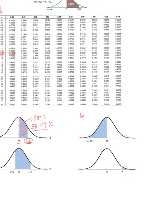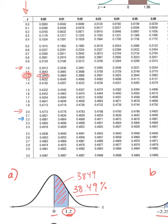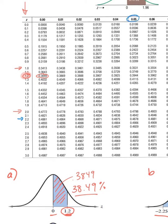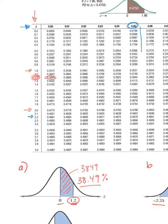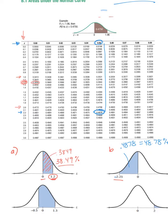Part B asks for the area between 0 and negative 2.25 standard deviations from the mean. We look up 2.2 in the Z table, then use the 0.05 column for the hundredths place, giving an area of 0.4878 — so 48.78 percent. Notice: negative versus positive doesn't matter here because we're looking at area, which is always positive. The Z score simply indicates movement away from the center.